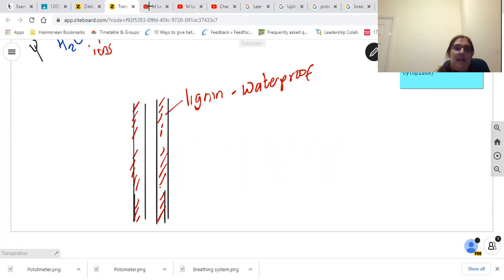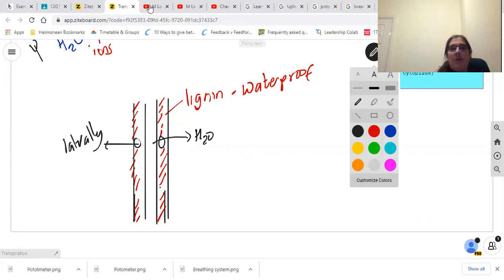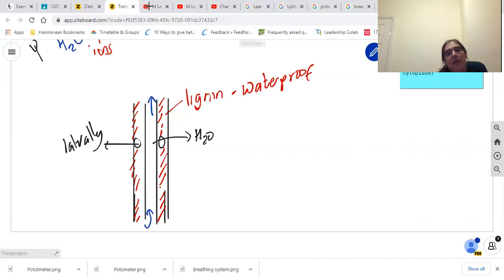There are places in the walls where there are pits so that water can go laterally out to them. But other than that, water will just move from the bottom upwards in this xylem.